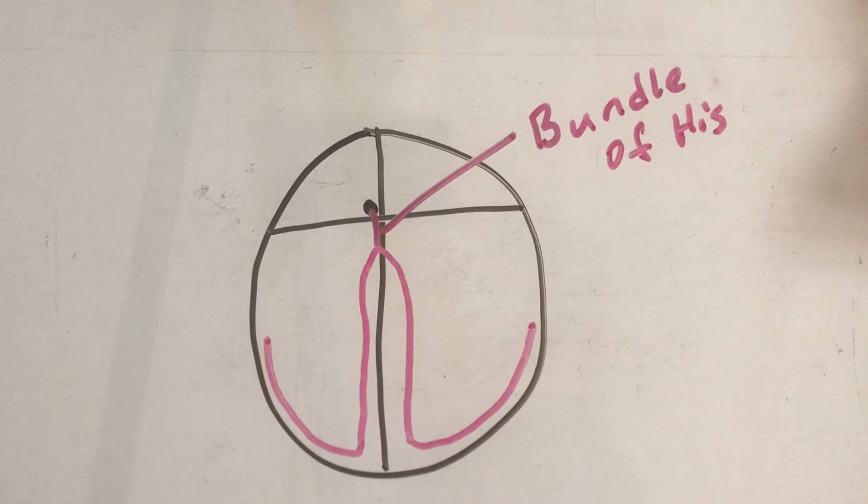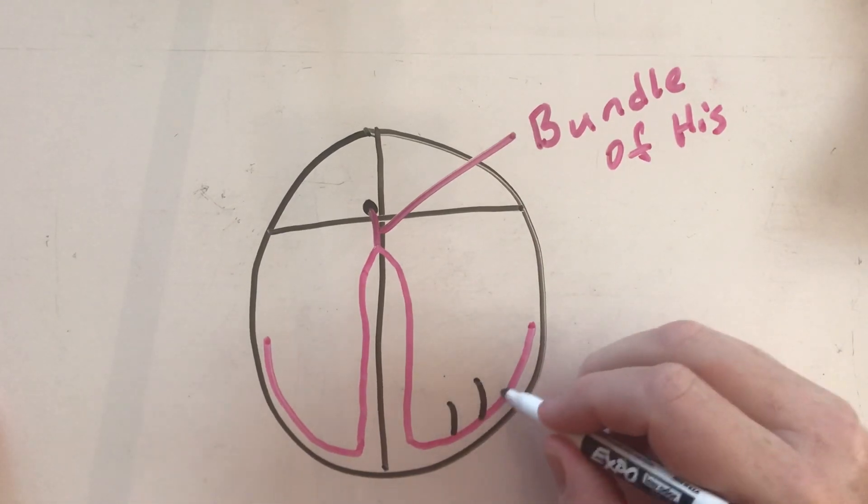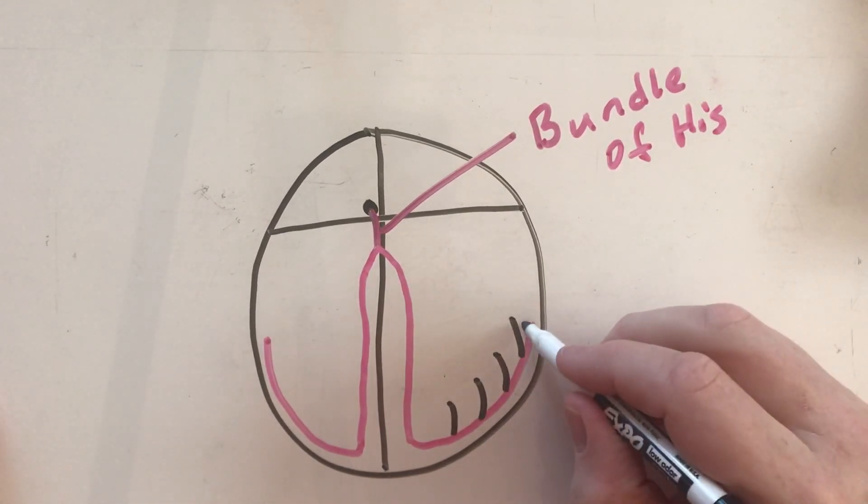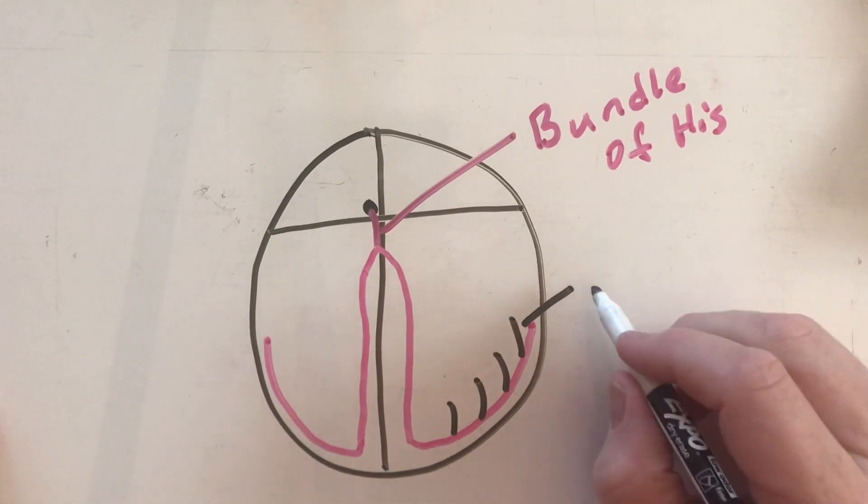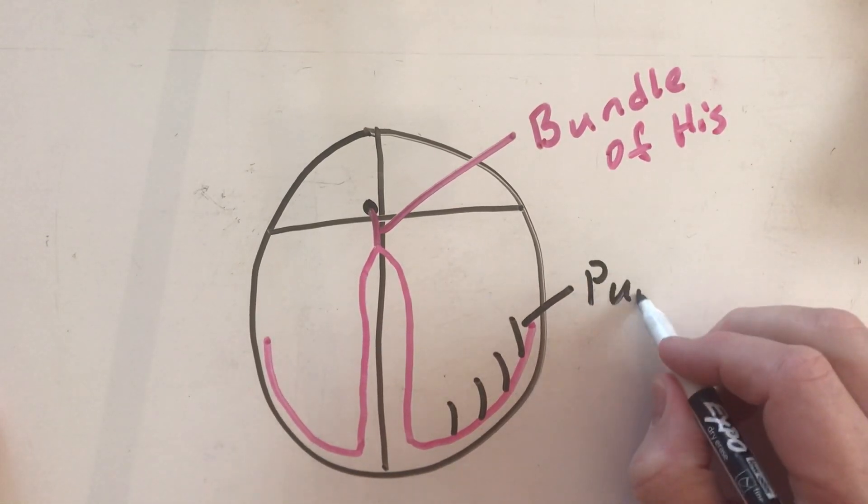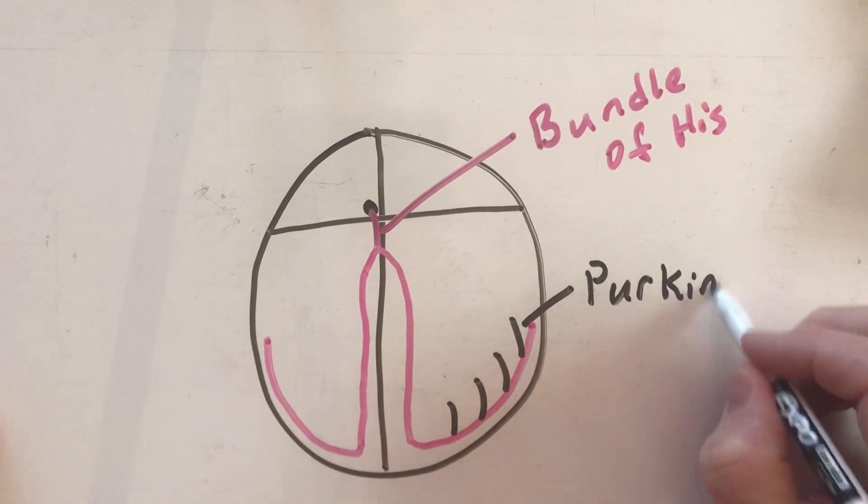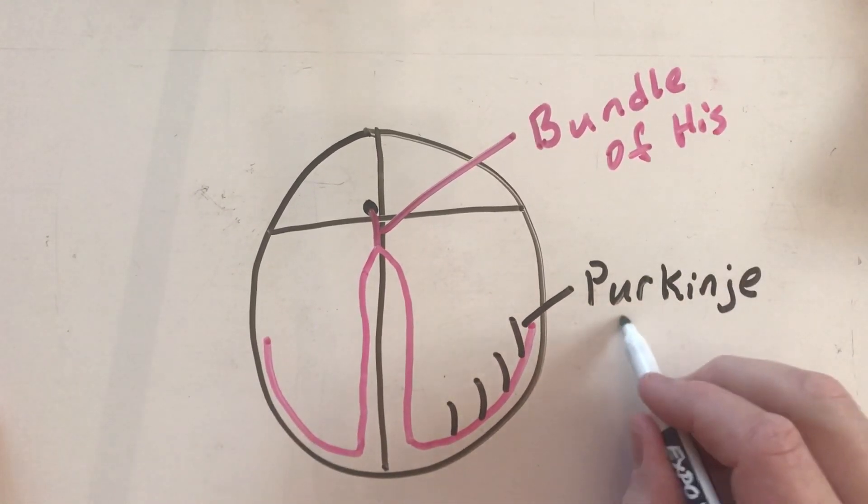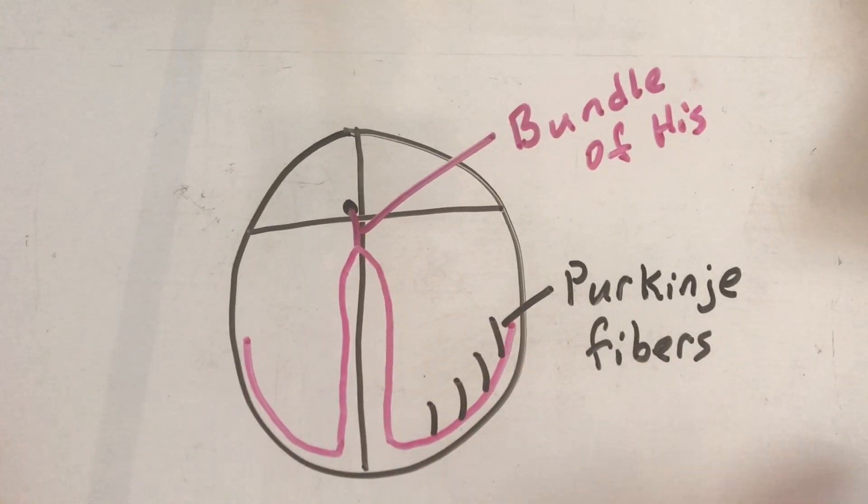And then coming off of the bundle of His, you have something called Purkinje fibers. You have Purkinje fibers, and this is all inside the muscles that are in the heart wall. So the impulse is going to come from the SA node.